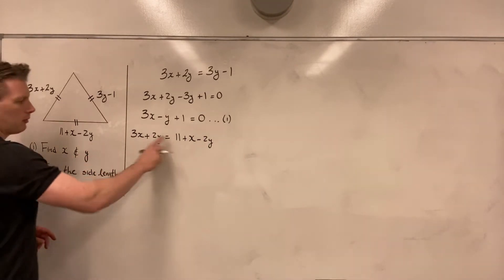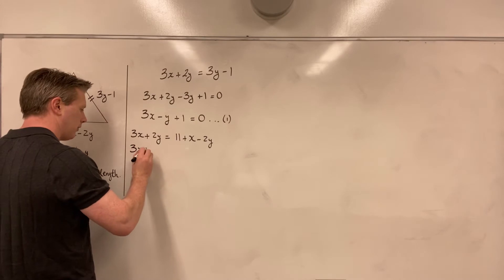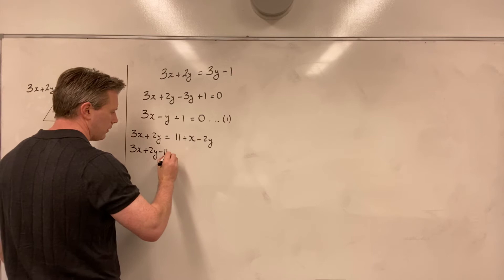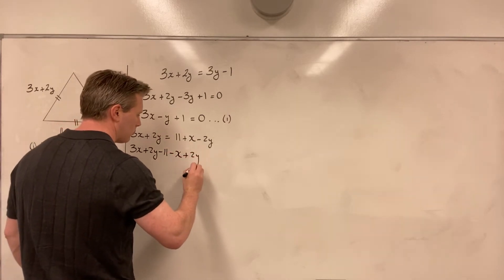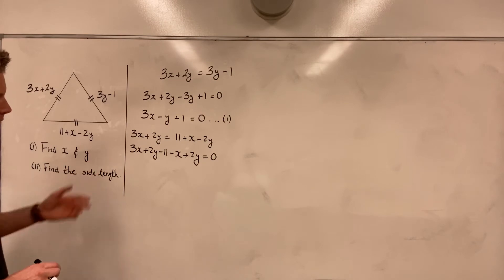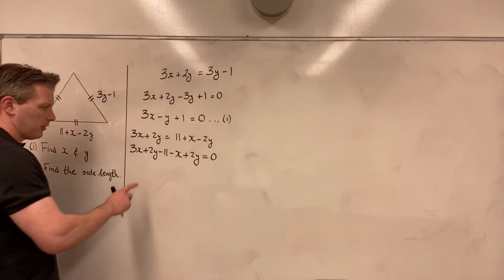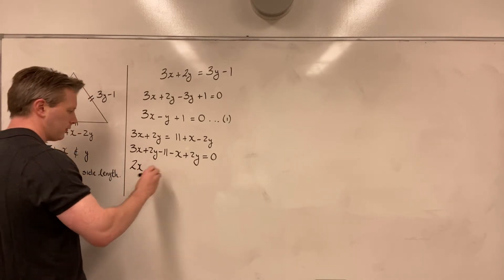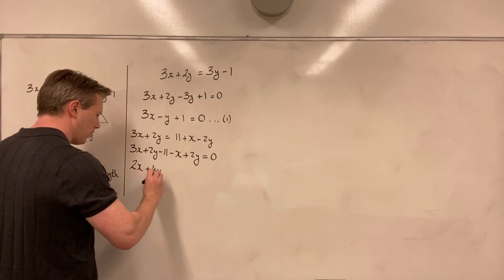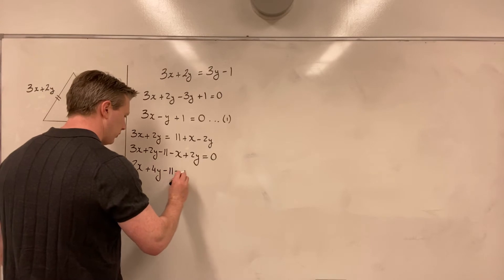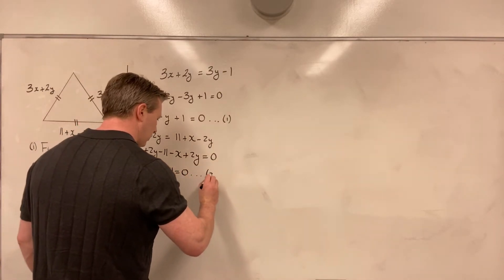Again, bringing from the right to the left, I have 3x plus 2y minus 11, subtracting 11 from both sides, minus x, and then finally 2y plus 2y is equal to 0. I've subtracted 11 from both sides, I've subtracted x from both sides, and I've added 2y to both sides. Everything is now on the left-hand side of the equation. Gathering my like terms, 3x minus x, that's 2x. 2y plus 2y is 4y, and I have minus 11 is equal to 0, and I'll call this equation number 2.